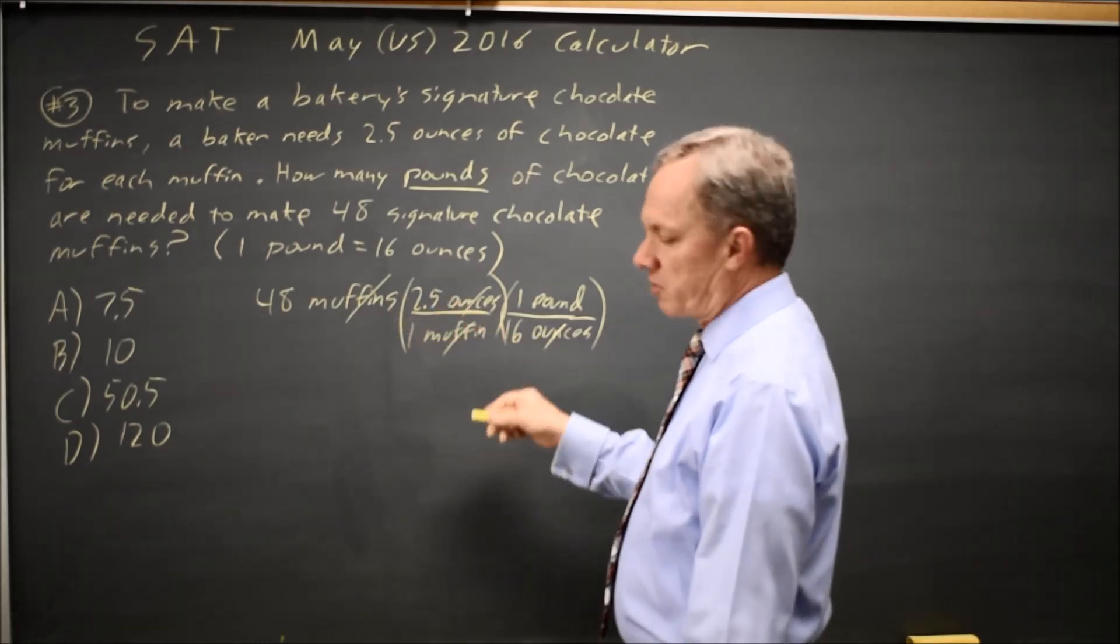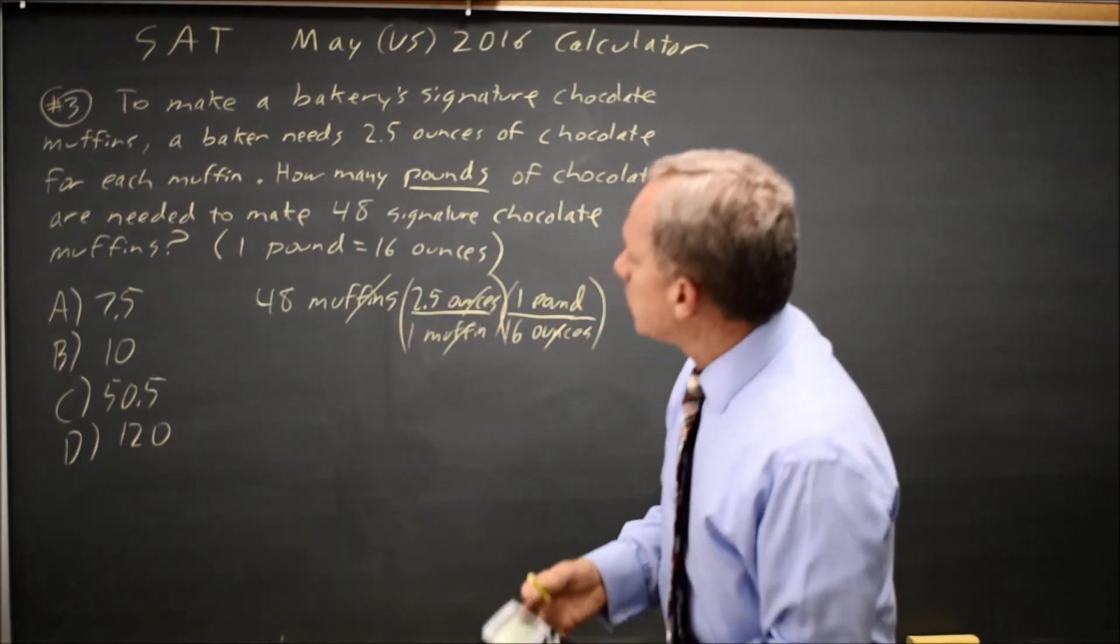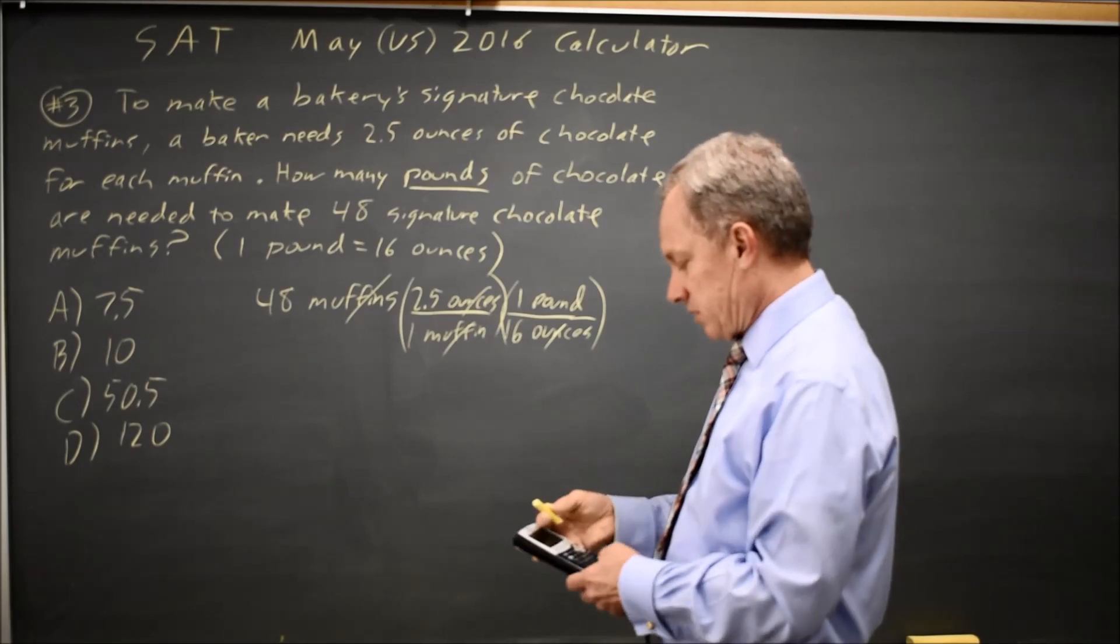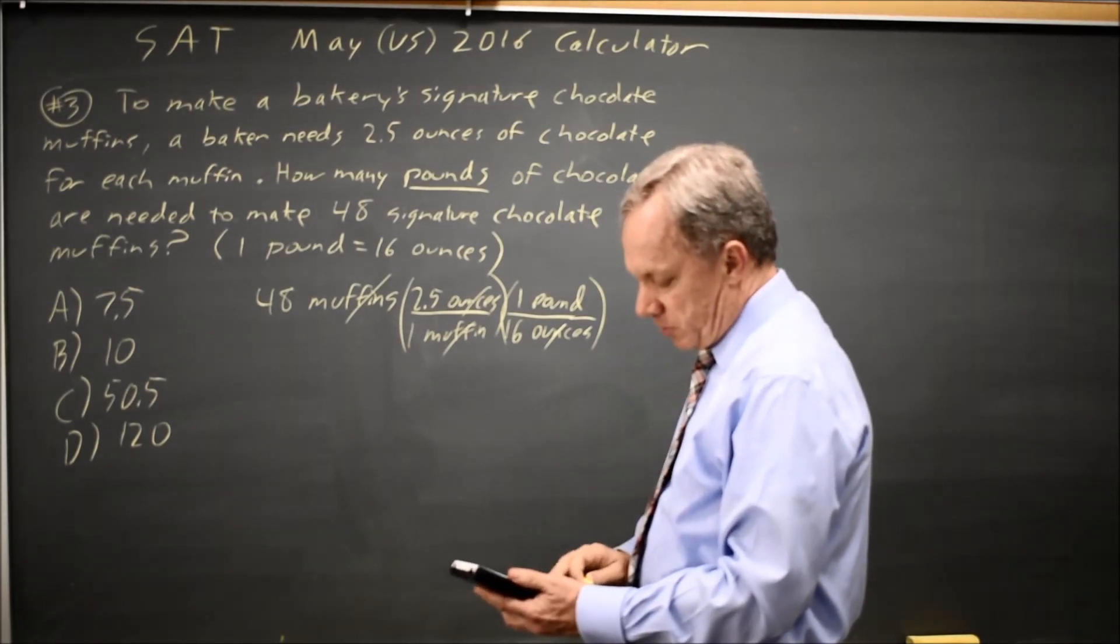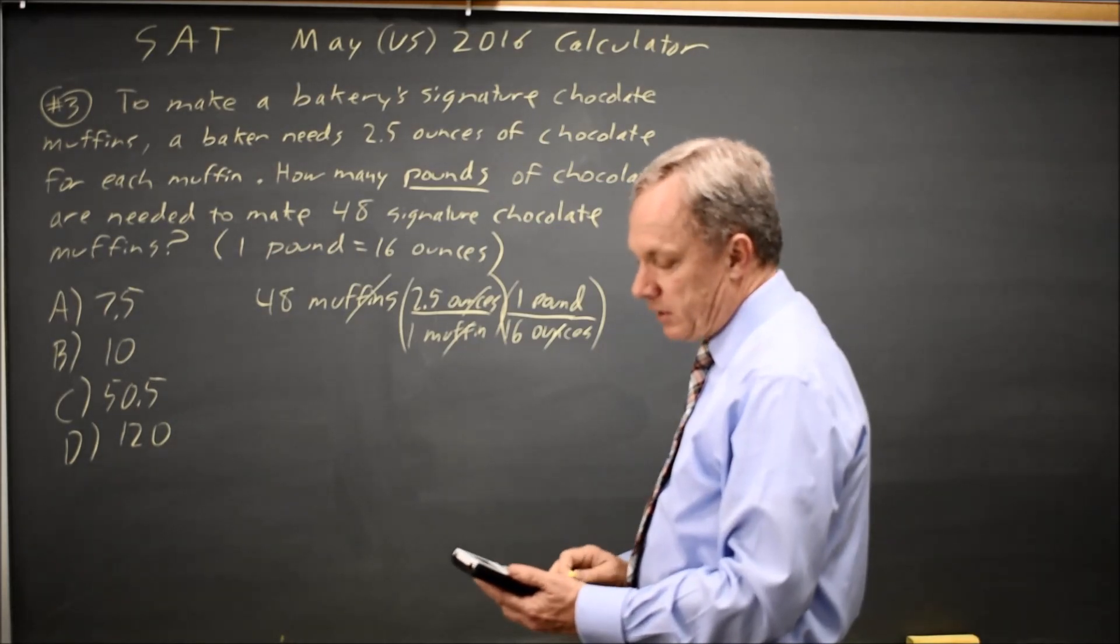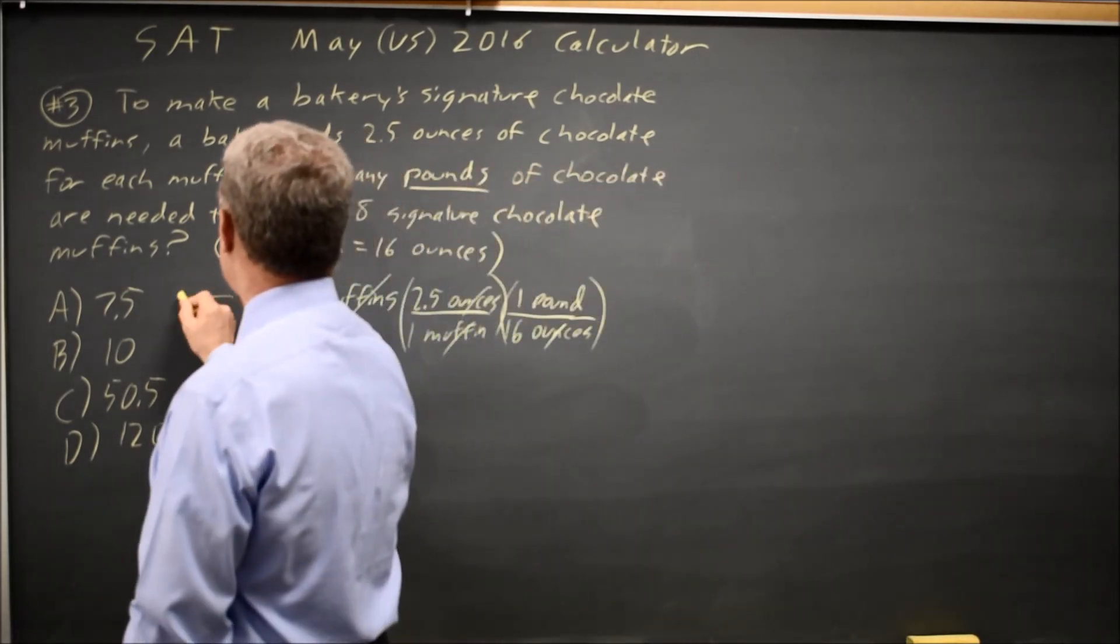So 48 times 2.5 over 16 would be the number of pounds. 48 times 2.5 over 16 is 7.5 pounds.